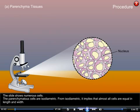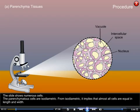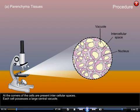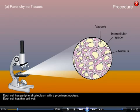The slide shows numerous cells. The parenchyma cells are isodiametric, meaning almost all cells are equal in length and width. At the corners of the cells are present intercellular spaces. Each cell possesses a large central vacuole, peripheral cytoplasm with a prominent nucleus, and a thin cell wall.